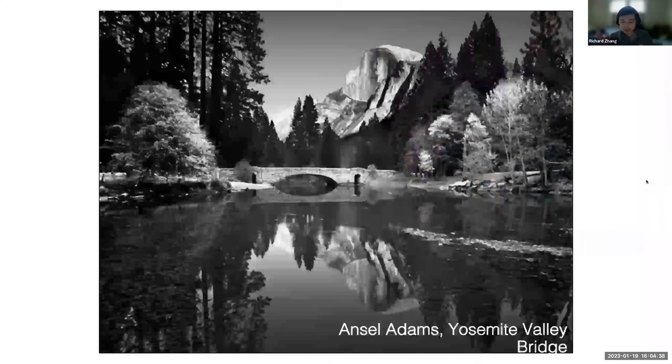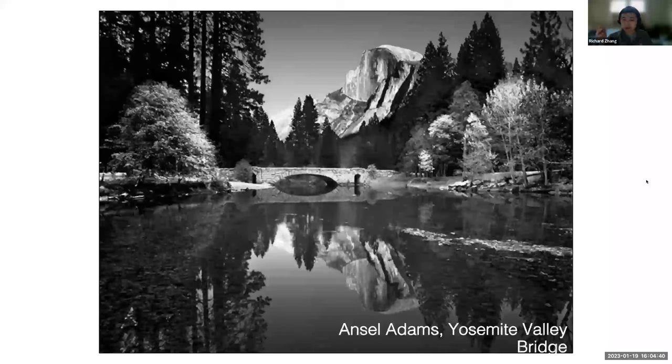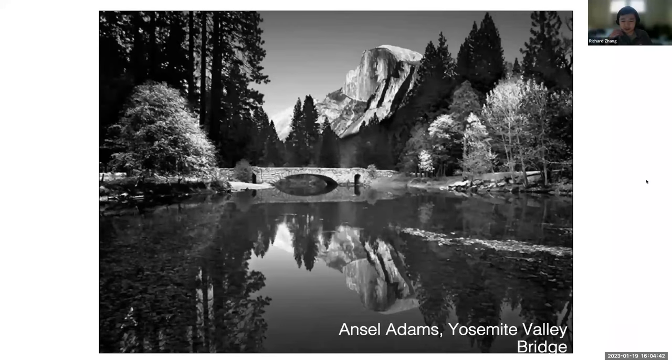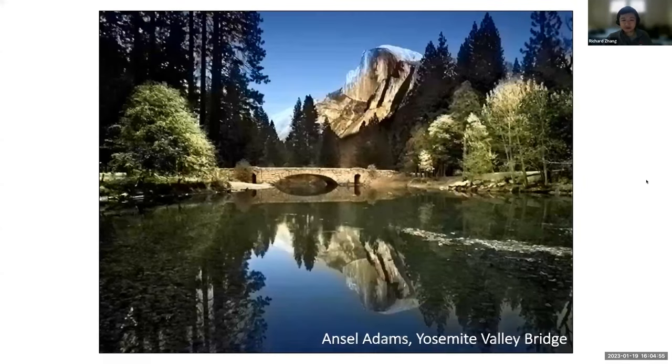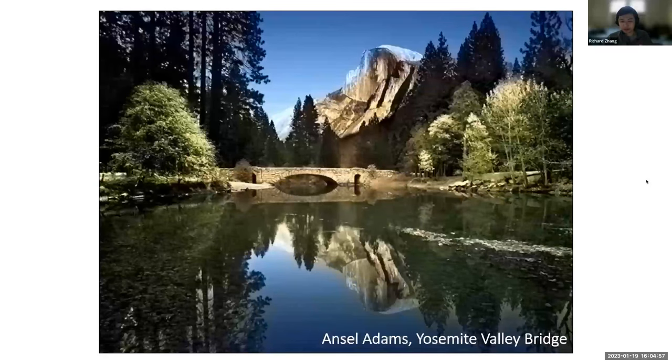So is this even possible? Let's do some introspection here. Here's an iconic photo of Yosemite Valley by Ansel Adams. How would this look like in color? We know that the water should be blue, the sky should be blue, the vegetation should be green and the mountains should be brown. Sure enough, our system is able to predict kind of plausible colors for this image.